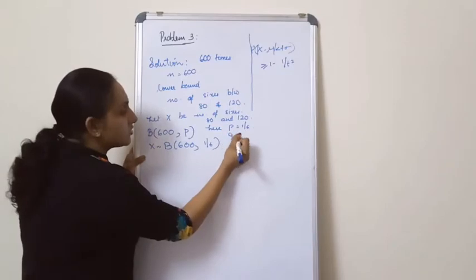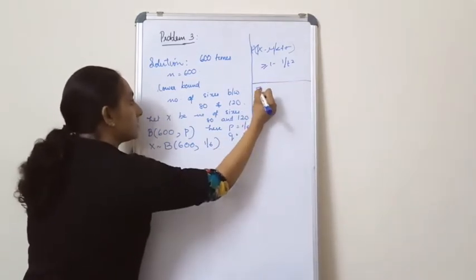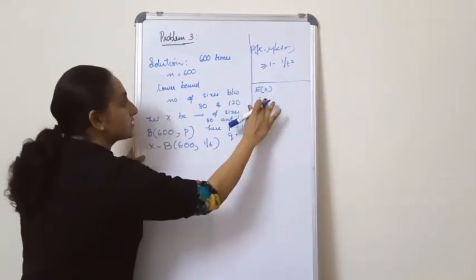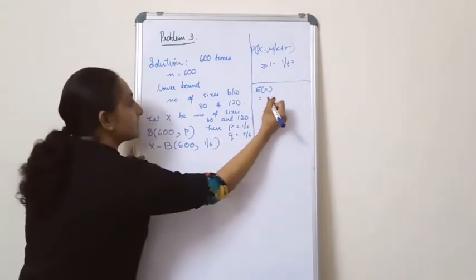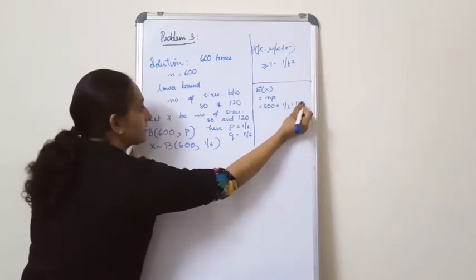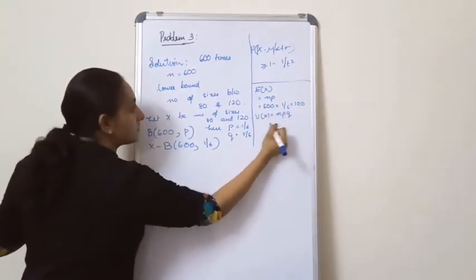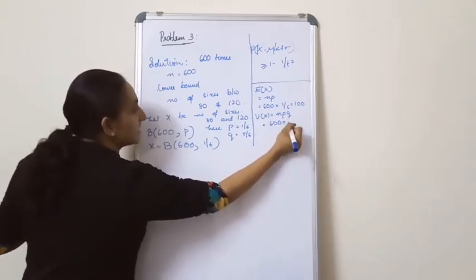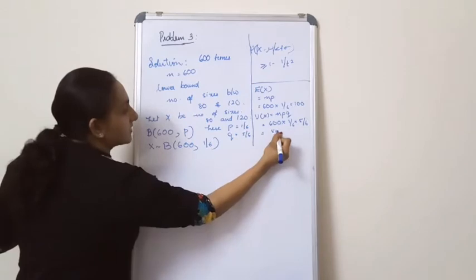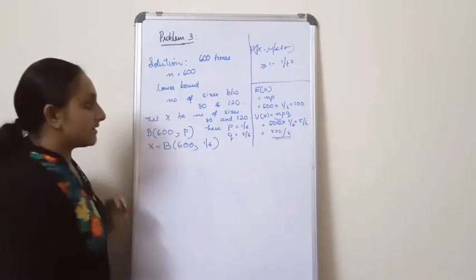P is 1 by 6, so Q will be 5 by 6. Now, the expectation of X equals mu, which in the case of binomial distribution is N·P, equal to 600 into 1 by 6, which is equal to 100. The variance of X in the case of binomial distribution is N·P·Q, equal to 600 into 1 by 6 multiplied by 5 by 6, which equals 500 by 6. So this is your variance.